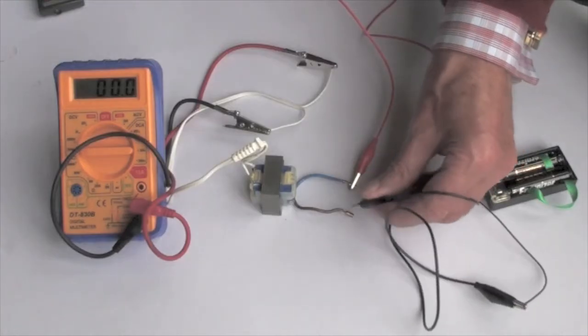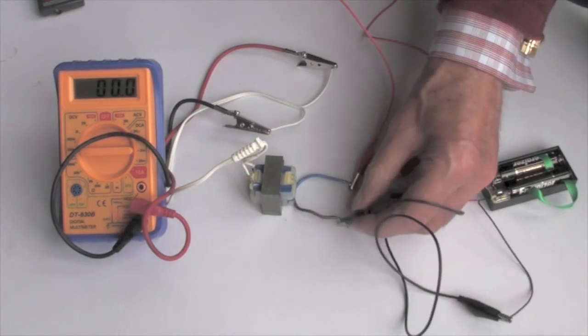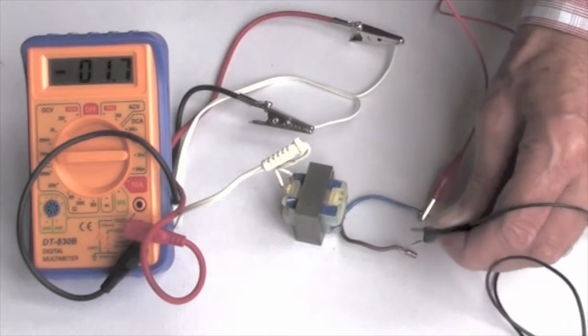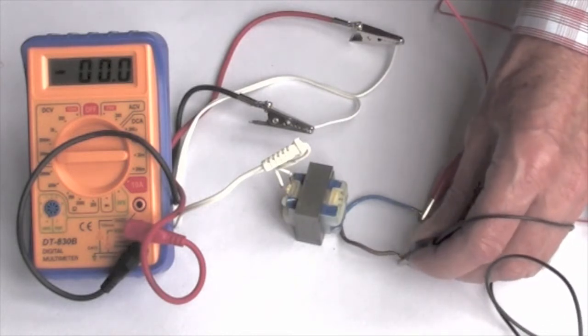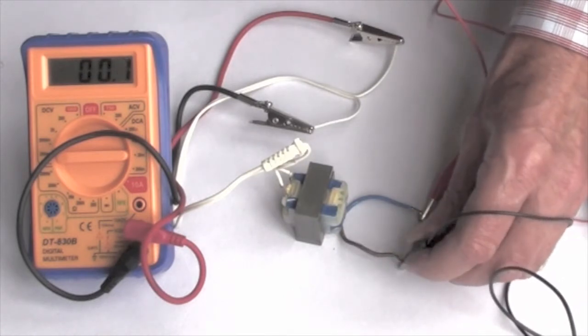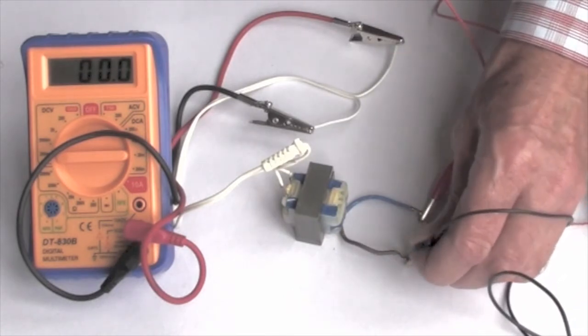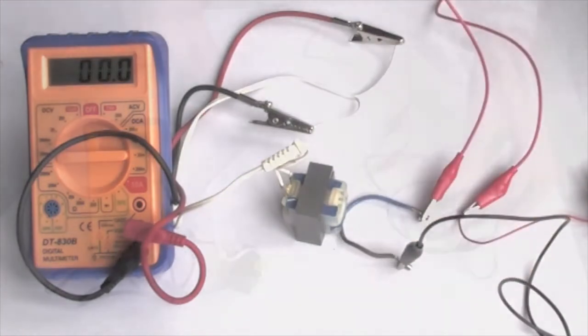Here you can see a voltmeter connected across the output or secondary terminals of the small transformer we had before. As the dry cell is connected across the primary coil, there's a pulse of electricity shown on the voltmeter. As it's disconnected, there is another pulse in the opposite direction. There are only pulses when it's connected or disconnected, not when it remains on or off.